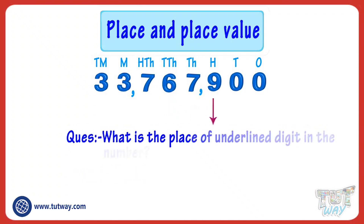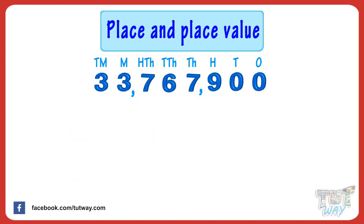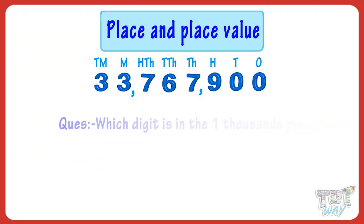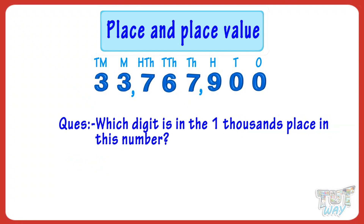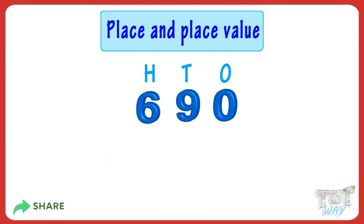What is the place of the underlined digit in the number? It is one hundred. Which digit is in the one millions place in this number? Three is in the one millions place. Which digit is in the one thousands place in this number? Seven is in the one thousands place.